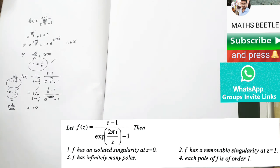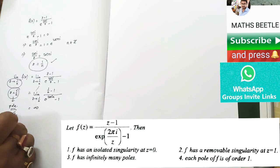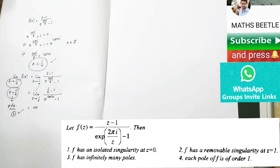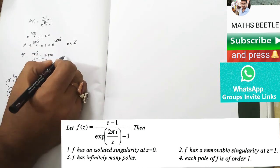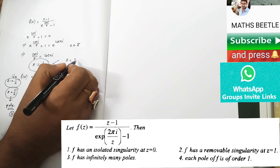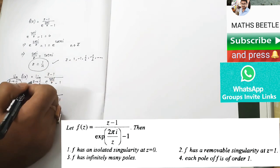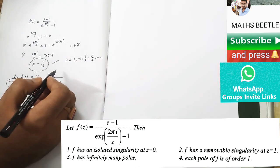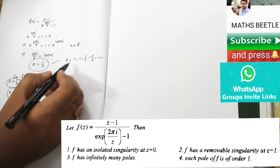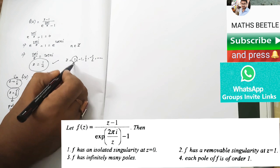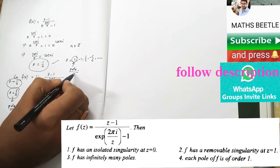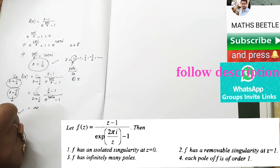This implies the third option is correct — f has infinitely many poles. Also observe that we get z = 1, −1, 1/2, −1/2, and so on, all of which are poles. The second option says f has a removable singularity at z = 1, but z = 1 is actually a pole, so the second option is false.